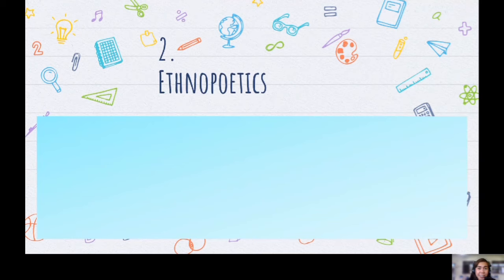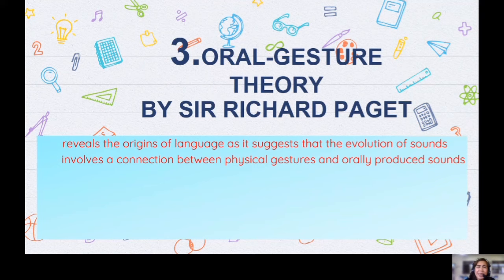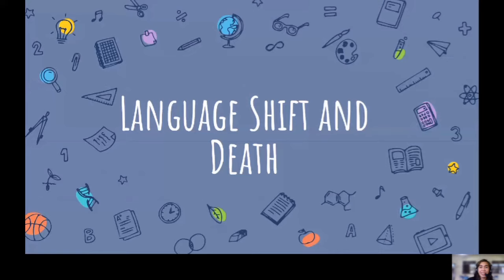The second theory is ethnopoetics — our language is nourished and enriched because of literature, poetry, songs, and chants. This suffices the art of the language we have. The oral gesture theory believes that the origin of language is the evolution of sound combined with gesture — it should be oral plus gesture. However, critics say you cannot gesture everything or give an action to everything that you do.